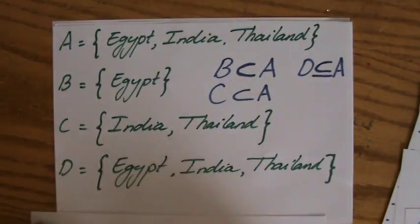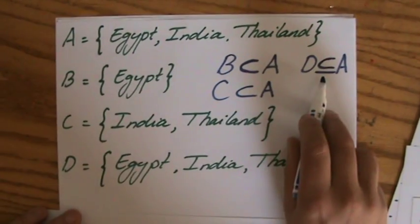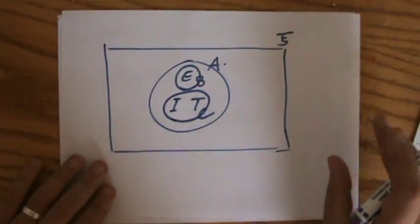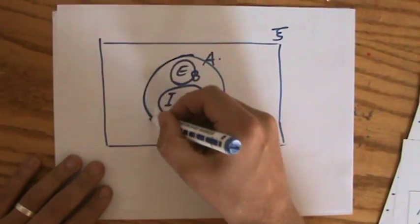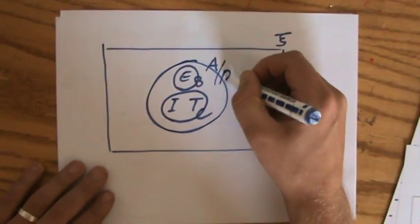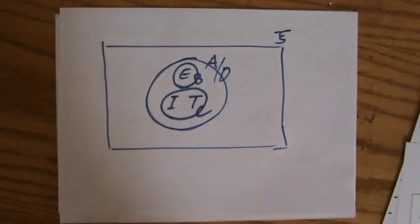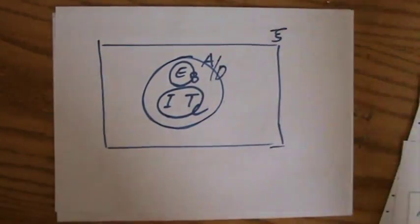And then why do we call set D just a subset of A? Because actually it is exactly the same. So this is also D, because D also contains the elements Egypt, India and Thailand. Now very quickly.